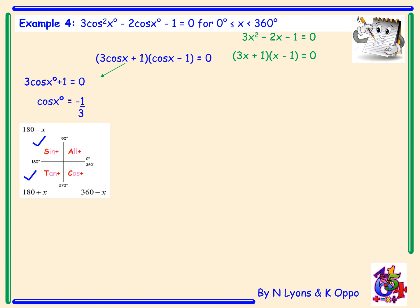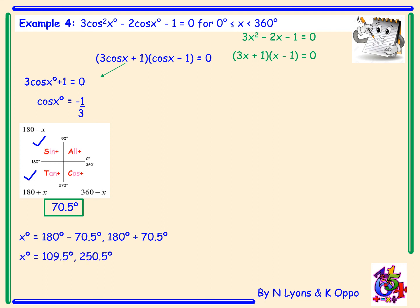Using a calculator, because it's not an exact value, we get 70.5 degrees as our working angle. The angle in the second quadrant is 180 minus 70.5, and the angle in the third quadrant is 180 plus 70.5, giving two solutions: 109.5 degrees and 250.5 degrees.